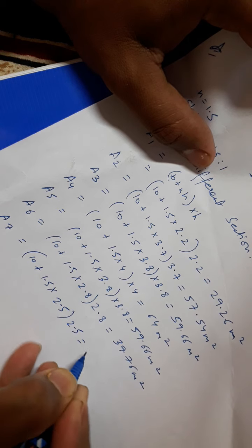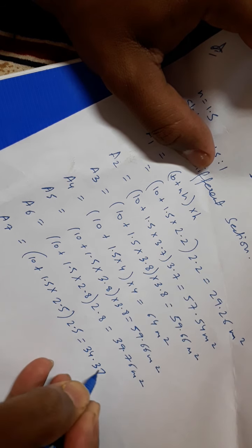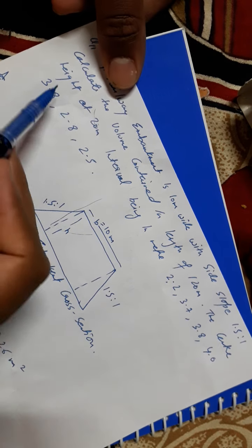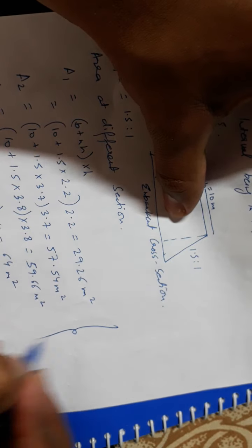So there were 7 cross-sections given in the question. You can see there were 7 heads: 1, 2, 3, 4, 5, 6, 7. There were 7 heads, so we have found out the 7 cross-sections.